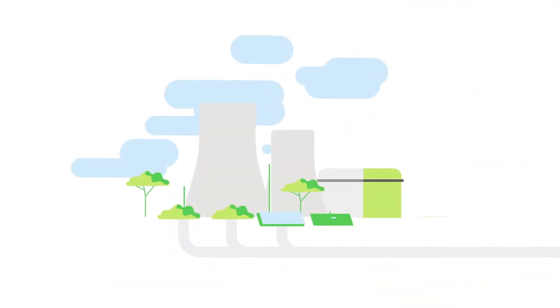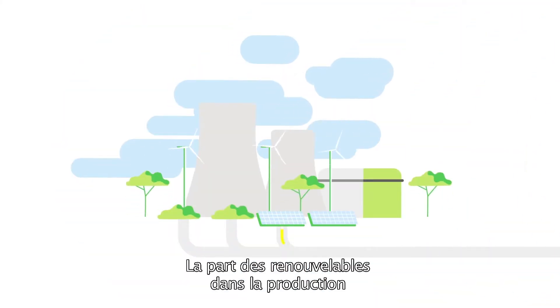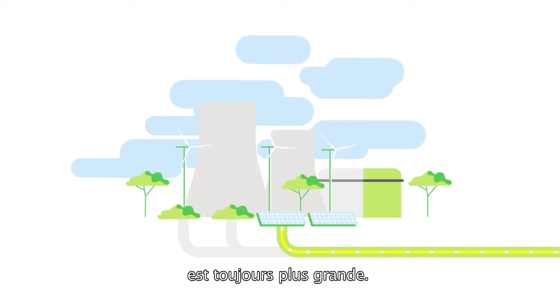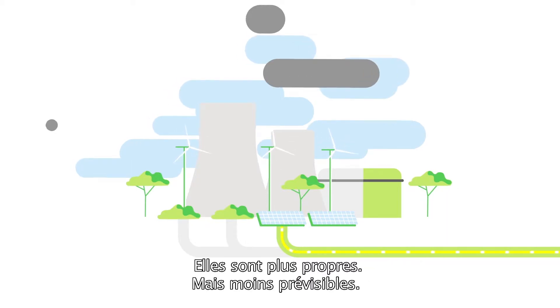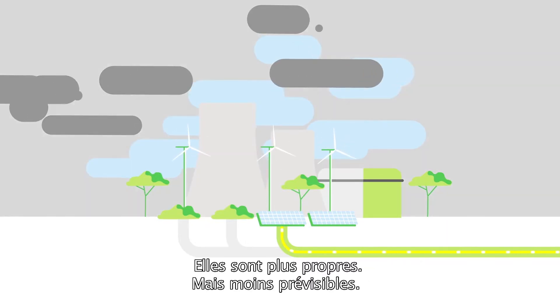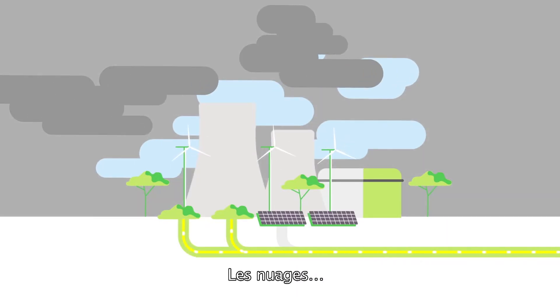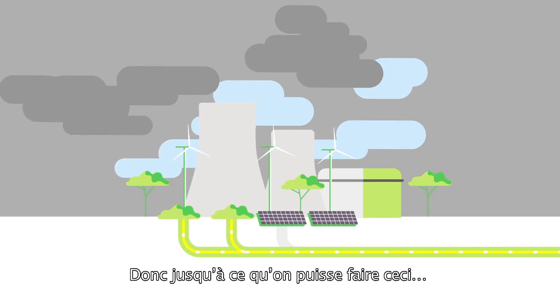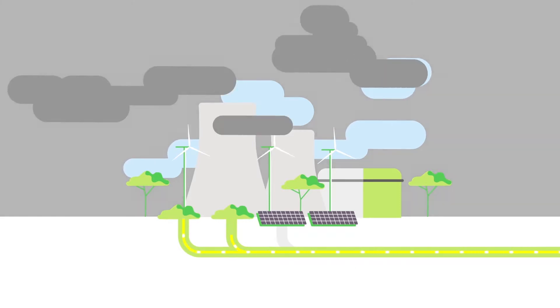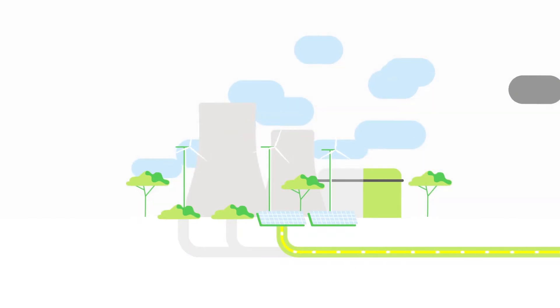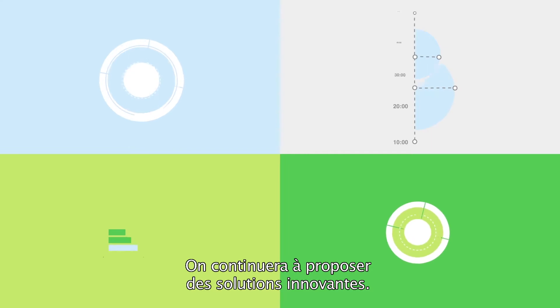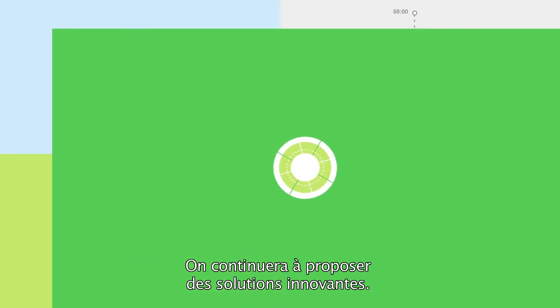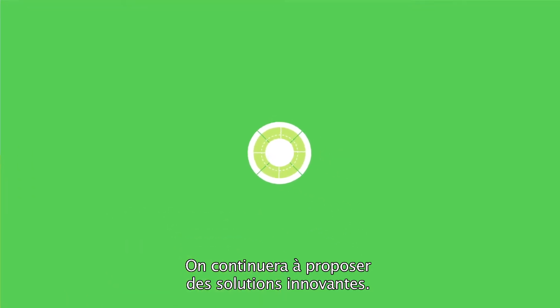Brilliant. With one wrinkle. An ever-growing part of production comes from renewables. They're cleaner, but less predictable. Remember clouds? So until somebody figures out how to do this, innovations will keep being made to keep things running smoothly.